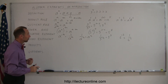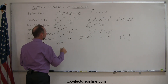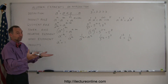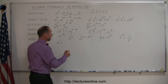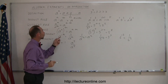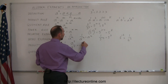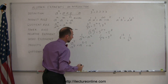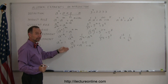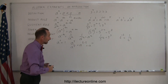Zero exponent — that's an interesting one. Any number a to the zero power is always equal to 1. That might seem puzzling — how can something raised to a zero power equal 1? But it makes sense: if we have a to the fifth power divided by a to the fifth power, using our quotient rule, that's a to the 5 minus 5, which is a to the zero power. And a fraction where the numerator equals the denominator is always equal to 1. Therefore, a to the zero power also equals 1.